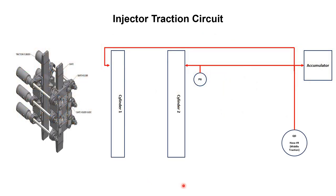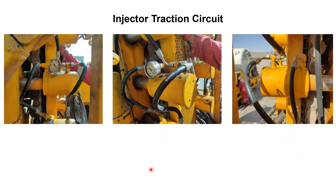To summarize the injector traction circuit: it starts from the hose panel, the hose goes to the accumulator, and with the help of a T-connection the flow is divided into two sections. One hose goes to one cylinder and the other hose goes to the parallel cylinder. We also have a pressure gauge which shows the pressure reading, as we have already seen in this slide.